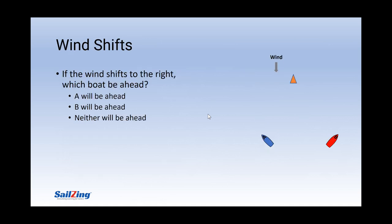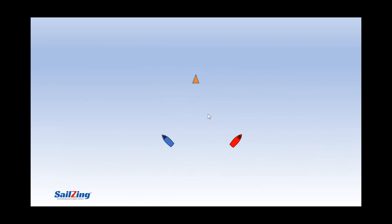Ladder rungs make it easy to understand how a wind shift makes you either gain or lose boats. With the wind straight down the course, A and B are currently even. If the wind shifts to the right, which boat will be ahead? To figure out which boat would gain, did you think it matters which tack they are on? Or does it matter where they are on the course?